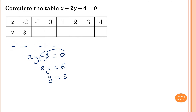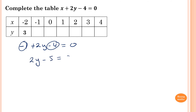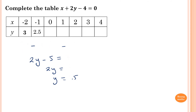Let me do one more. When x is minus 1, replace every x with minus 1: minus 1 plus 2y minus 4 equals 0. So minus 1 minus 4 is minus 5, leaving 2y minus 5 equals 0. So 2y equals 5, and y equals 2.5.